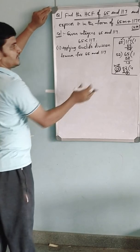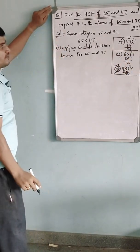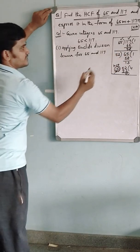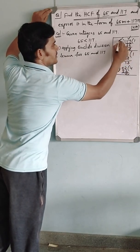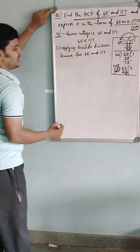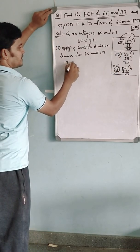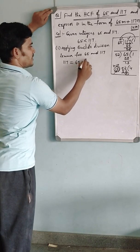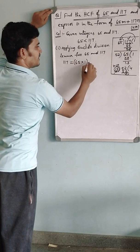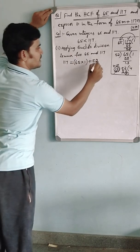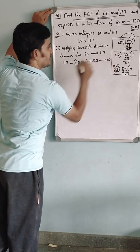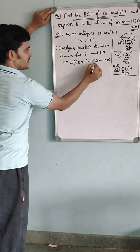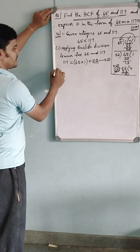From our rough work we can write the equation easily. Dividend equals divisor into quotient plus remainder. That is, 117 is written as 65 into 1 plus remainder 52. As the remainder is not zero, you have to go for the second step.